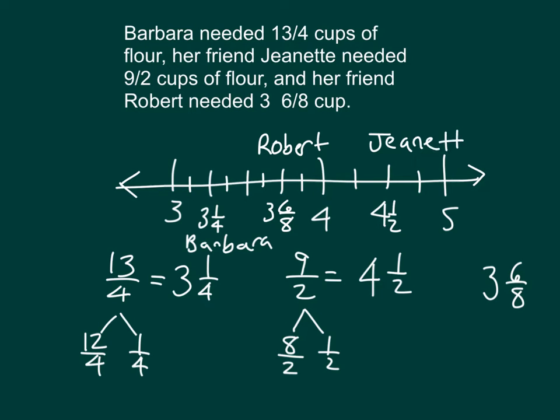And so when we're comparing these ones here and placing them onto the number line, the smallest amount would be furthest to the left, Barbara's. And then it would be Robert's amount. And then it would be Jeanette's amount for the flour. So if we were to compare them, they would go within that order.